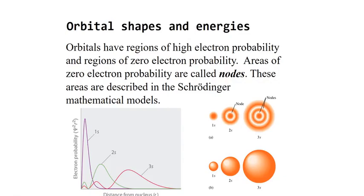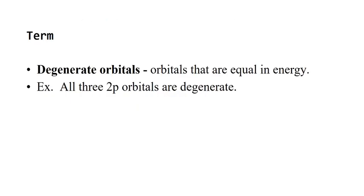Orbital shapes and energies. Orbitals have regions of high electron probability and regions of zero electron probability. When we say a P subshell is dumbbell-shaped, that's a place where there's a 90% probability of finding an electron in that space. Areas where they are not found are called nodes. A term we need to understand is degenerate orbitals — orbitals that are equal in energy. All three 2P orbitals are degenerate; electron orbitals in the same sub-level are degenerate.